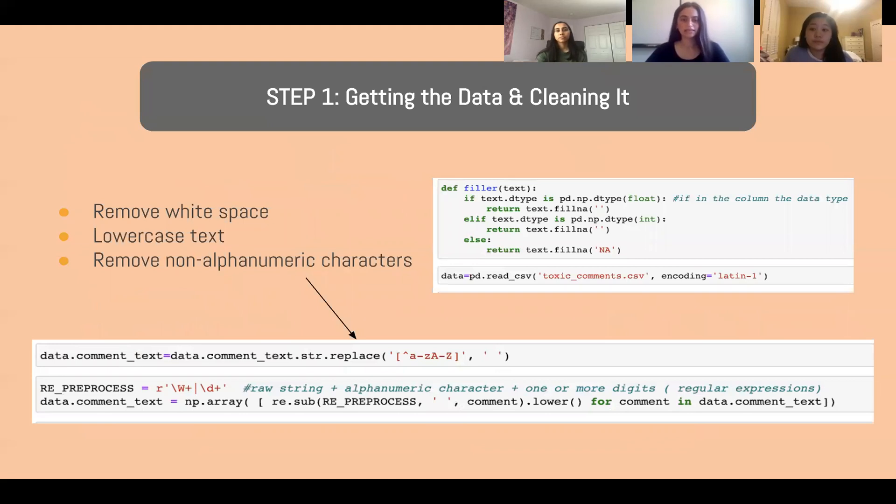So the first step is getting the data and cleaning it. So we removed whitespaces, we lowercased our text, and we removed non-alphanumeric characters. So you can see the code on the side, which is basically just standardizing our data. So then when we put it into the machine learning model, it can input it a little bit easier.